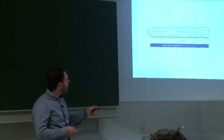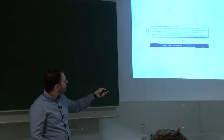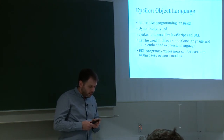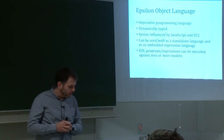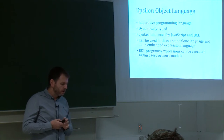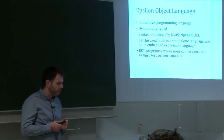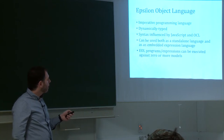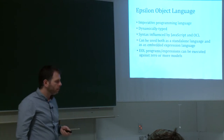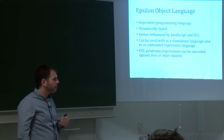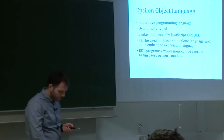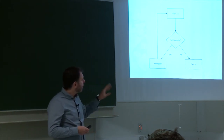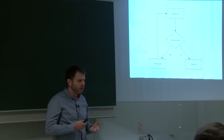Let's focus on EOL now — the core language of Epsilon — and later we'll cover EVL, ETL, and EGL. EOL is the core expression language of Epsilon. It's an imperative programming language, dynamically typed, so you don't get much helpful code completion in the editor. Its syntax has been influenced historically by OCL, the Object Constraint Language, and JavaScript. It can be used both as a standalone language and as an embedded expression language in higher-level languages of the Epsilon platform. We'll use a small flowchart example to talk about EOL features.